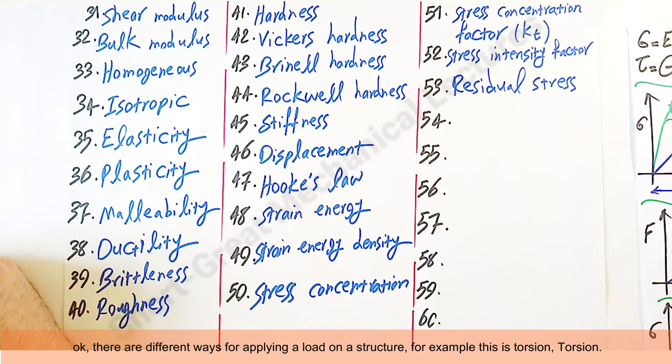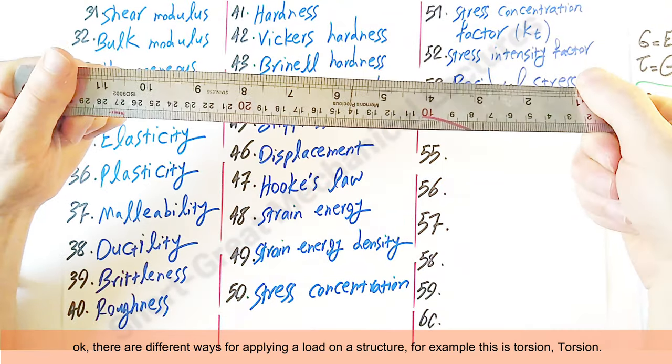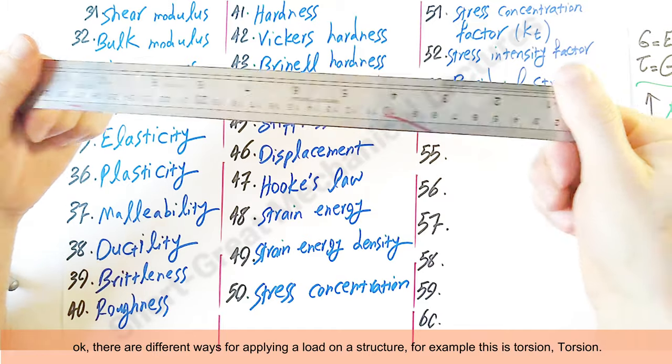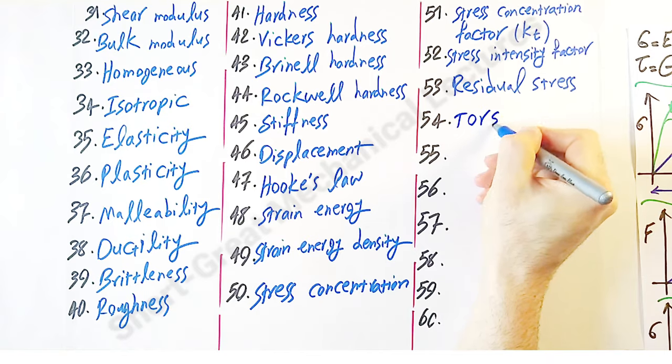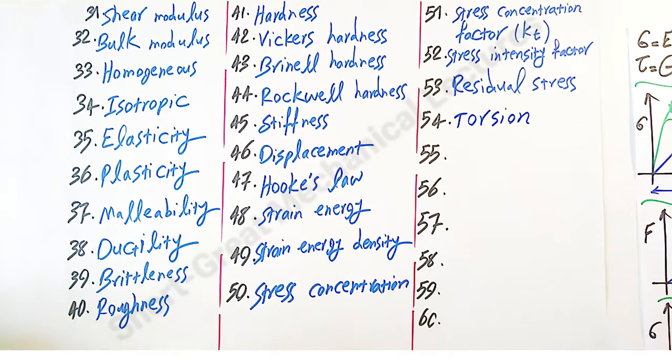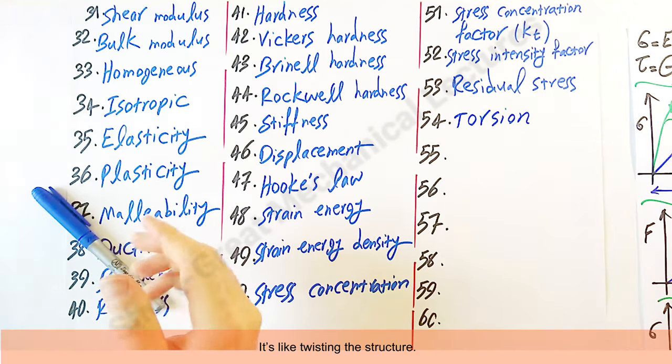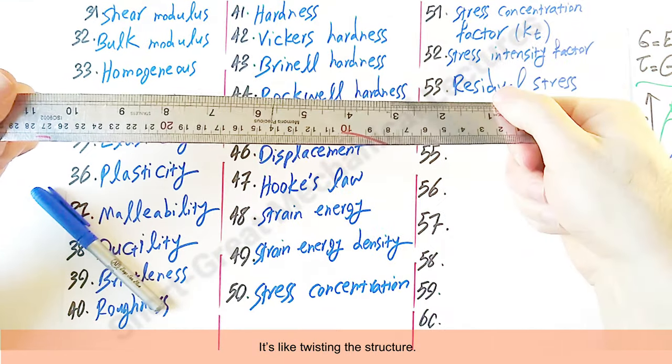Okay, there are different ways for applying a load on a structure. For example, this is torsion. It's like twisting the structure.